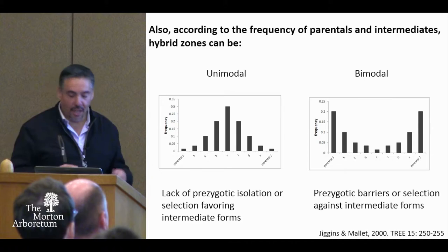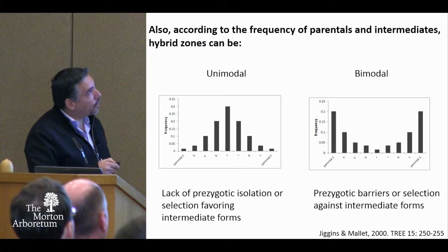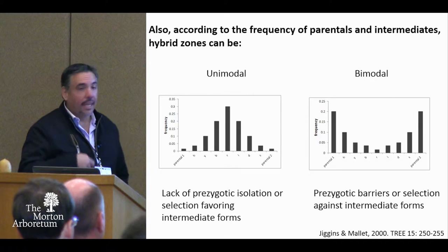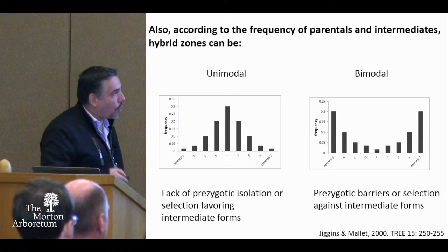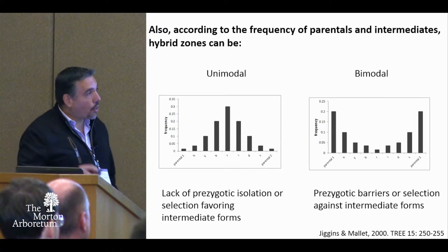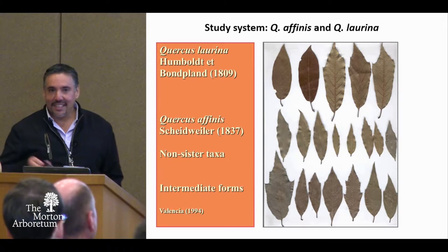We can divide hybrid zones into two main types according to the frequency of parental and intermediate individuals: a unimodal hybrid zone and a bimodal hybrid zone. In the unimodal hybrid zone, we see a high frequency of intermediates and a low frequency of parental individuals, and we can infer a lack of prezygotic isolation or selection favoring the intermediate forms. In the bimodal hybrid zone, we can infer that there are prezygotic barriers or selection against the intermediate forms.